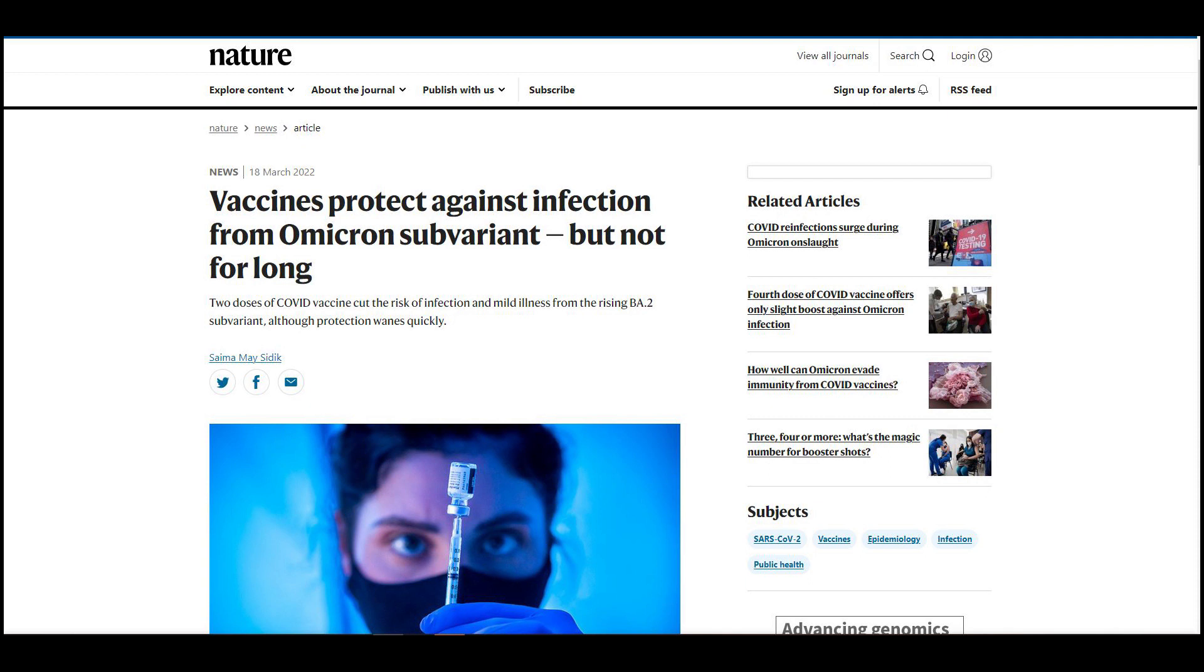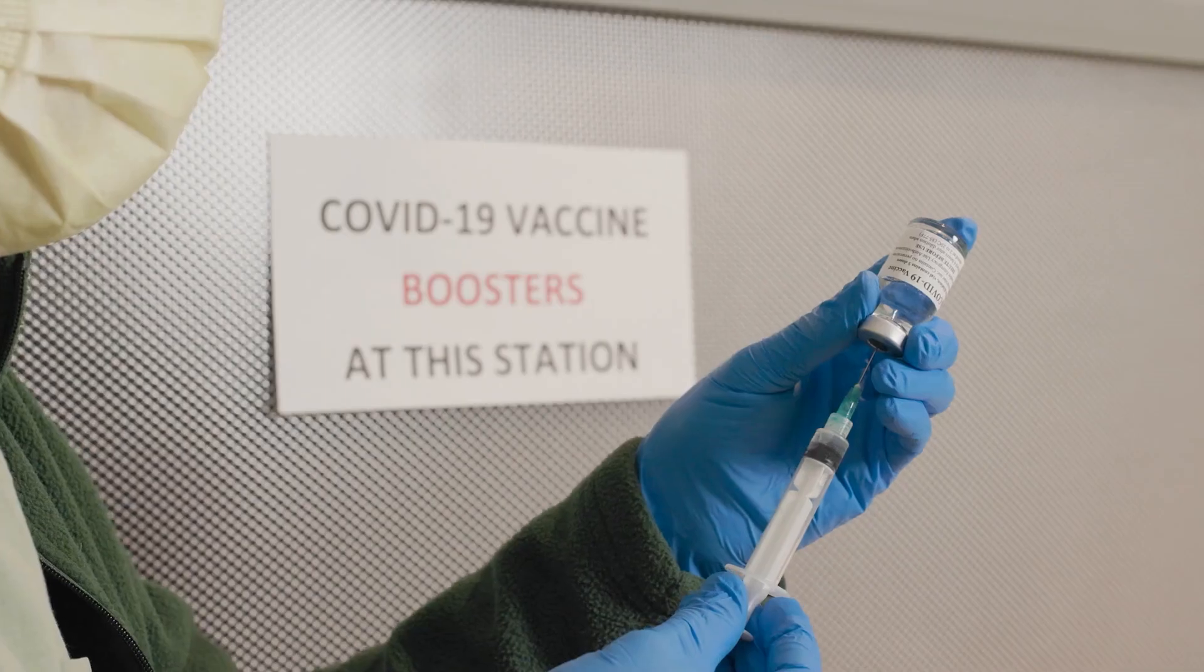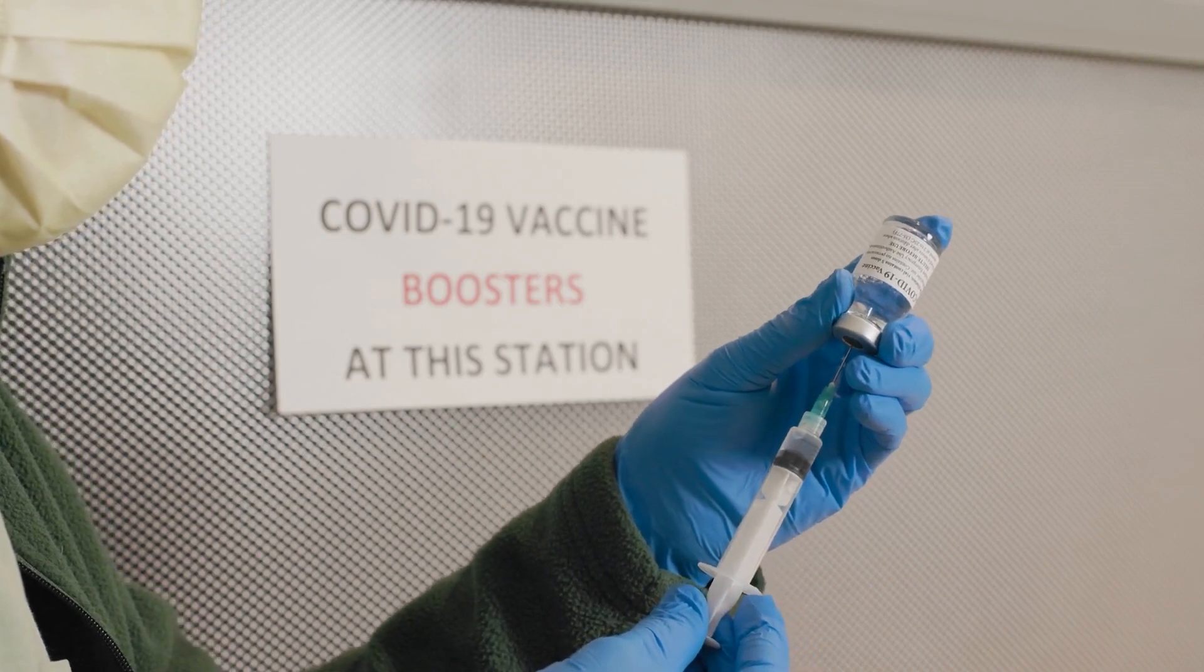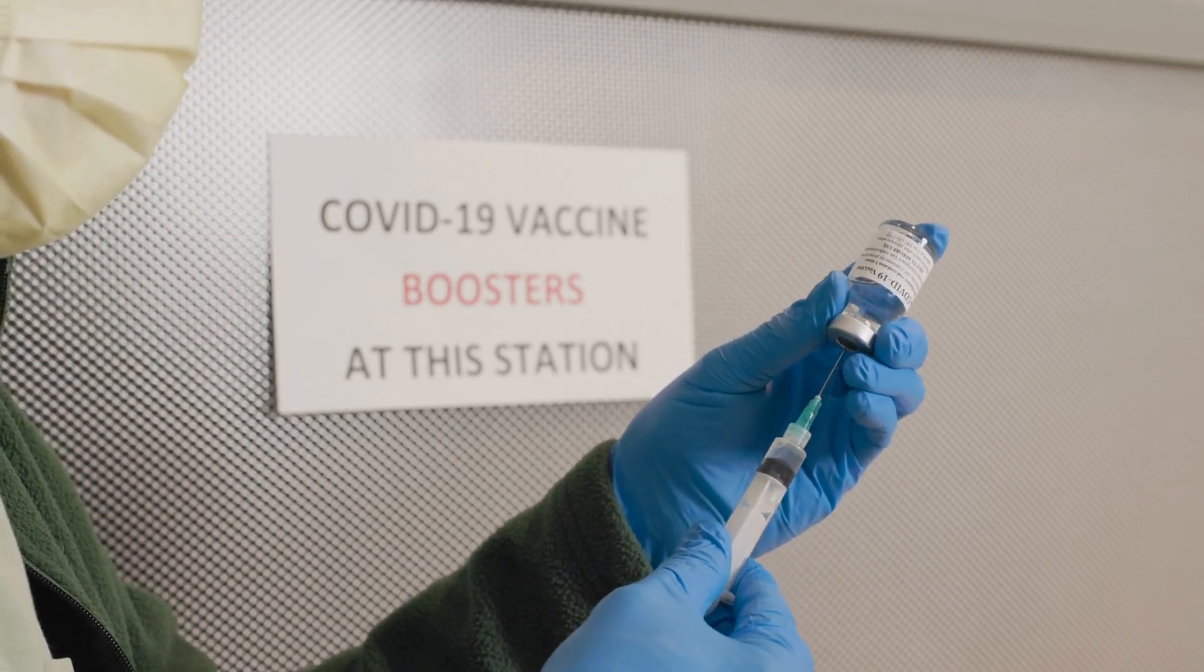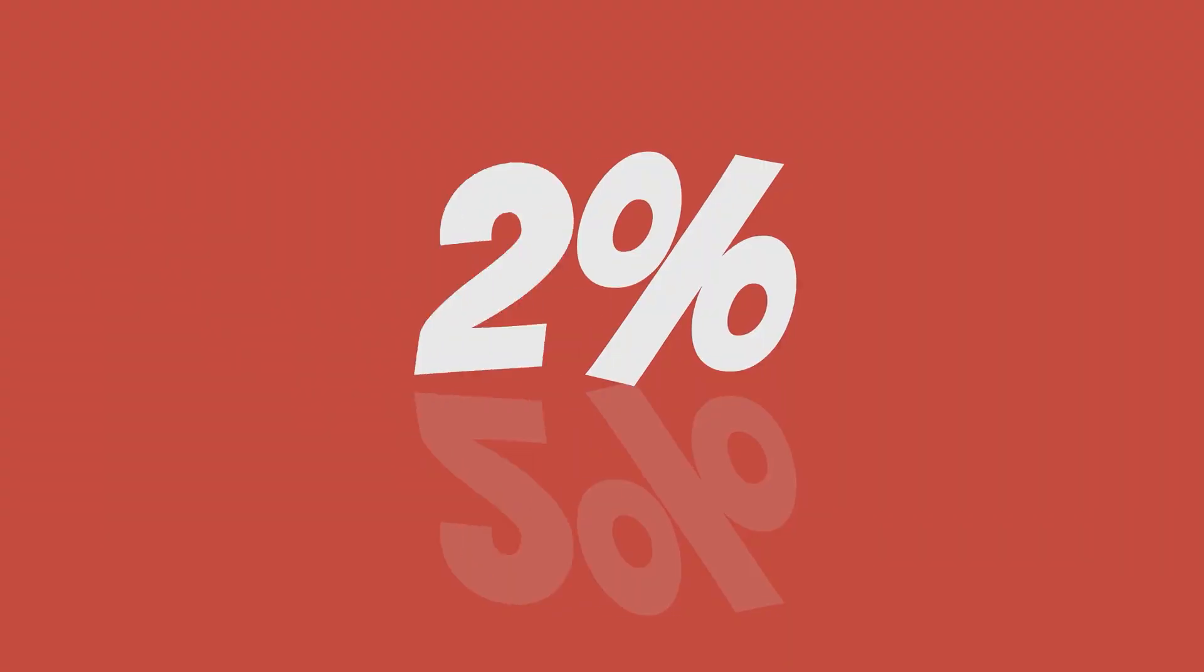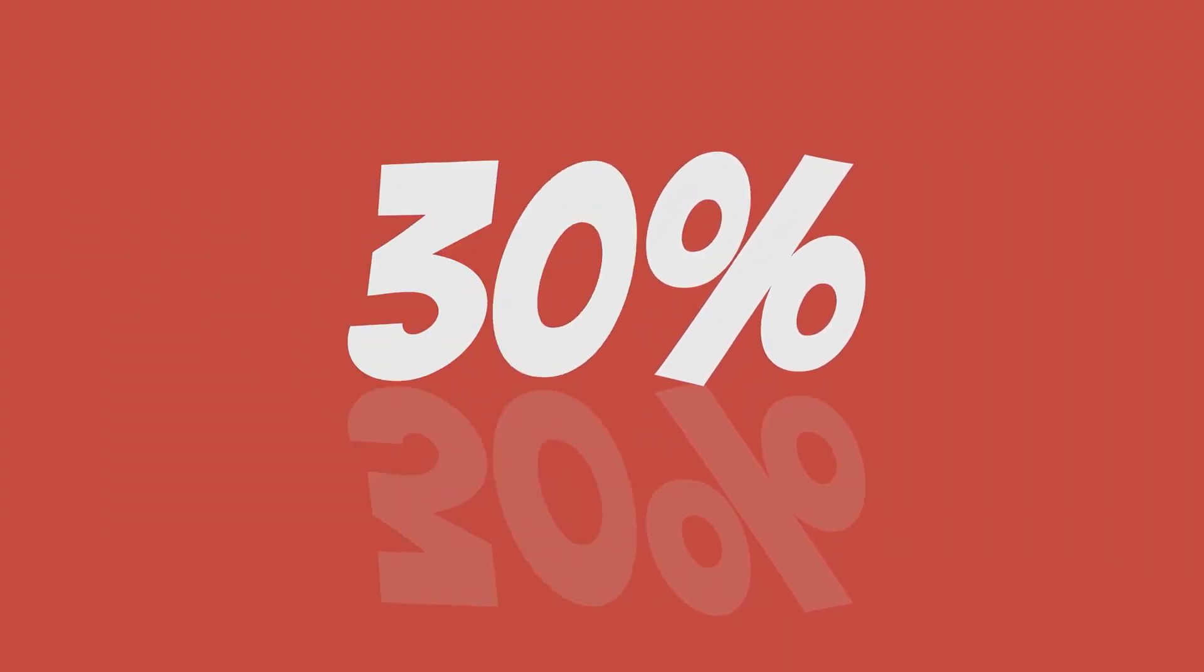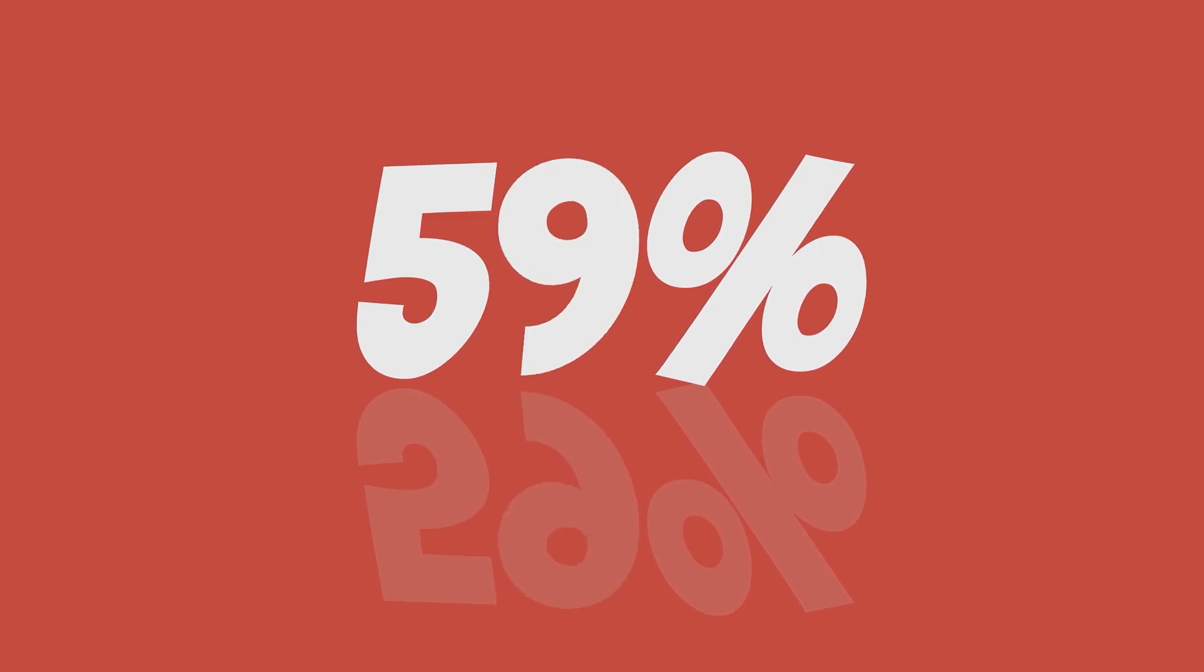BA.2 could be even worse than BA.1. This was the fear, said study author Leith Abu Raddad at Weill Cornell Medicine Qatar, as per Nature. If a person had their booster shot, the protection would jump back to 30% to 60%. Meanwhile, the protection against severe disease was 68% or higher for at least seven months.